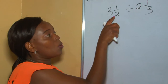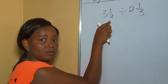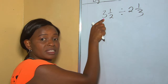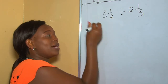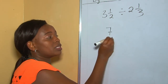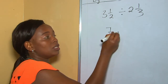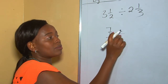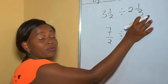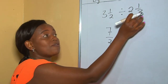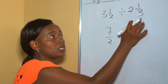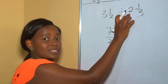For our first fraction: 2 times 3 is 6, 6 plus 1 is 7, all over 2. Our second fraction is also a mixed fraction, so we convert it into an improper fraction: 3 times 2 is 6.